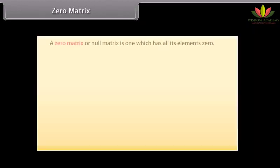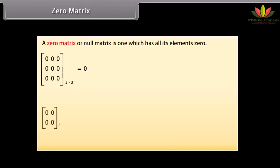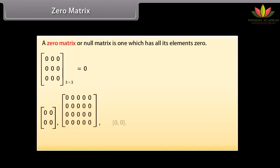Zero matrix. A zero matrix or null matrix is one which has all its elements equal to zero. Here is a 3 by 3 zero matrix, along with three more examples of zero matrices. The zero matrix is denoted by 0.